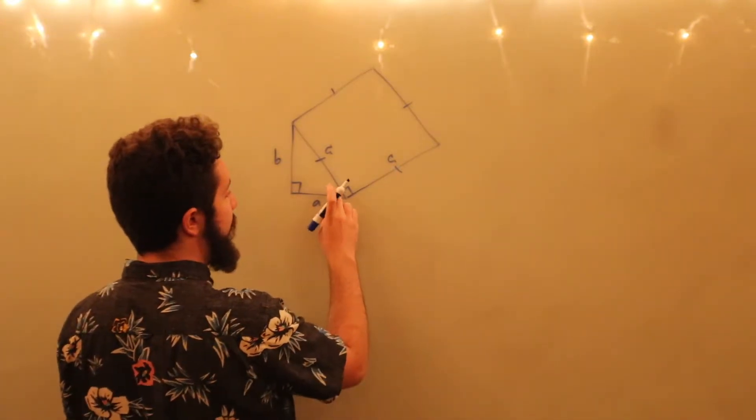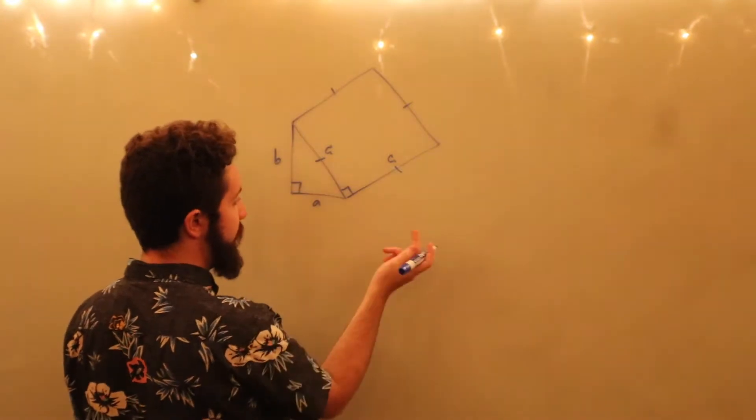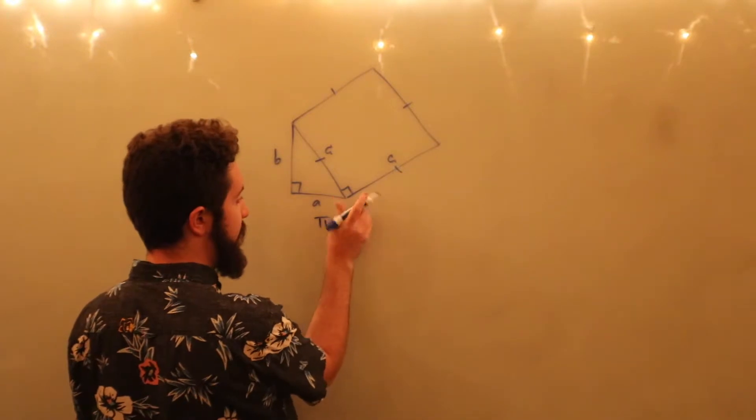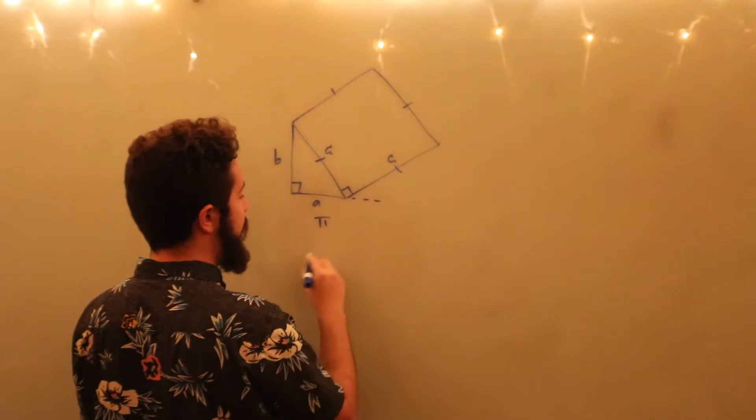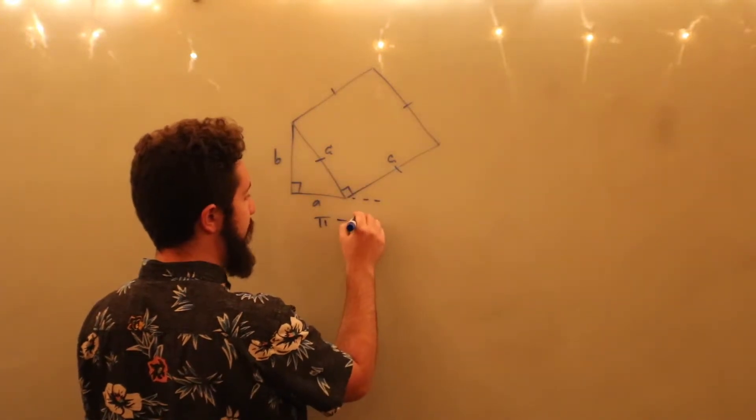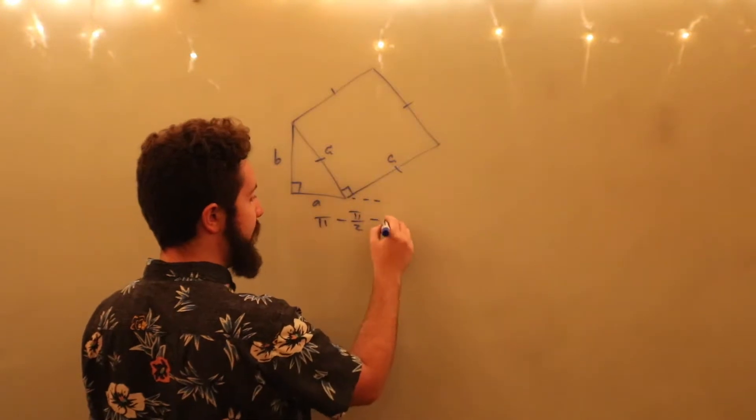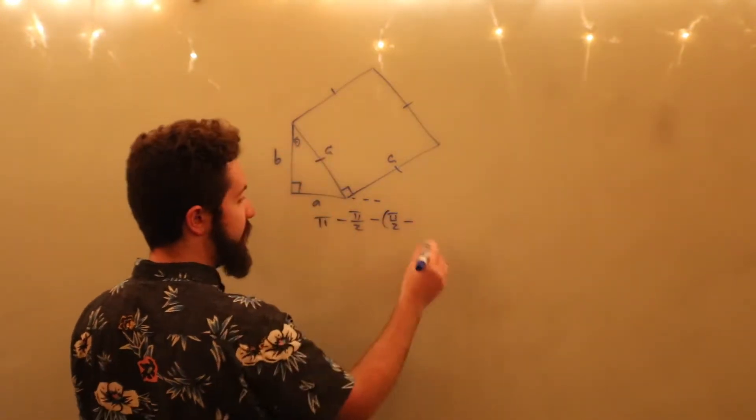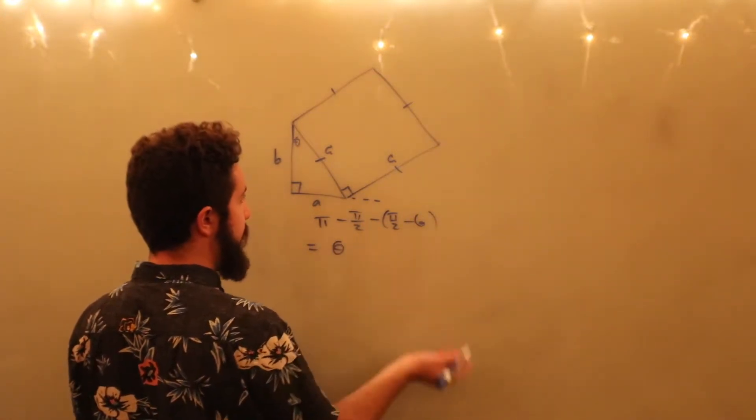Then noting that this angle is equal to π/2 minus that angle, so that π, the number of degrees in a straight line from here to here, minus π/2, which is this angle, minus π/2 minus this angle theta, is going to be equal to just theta.